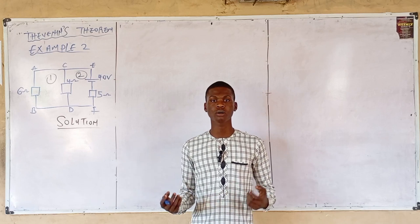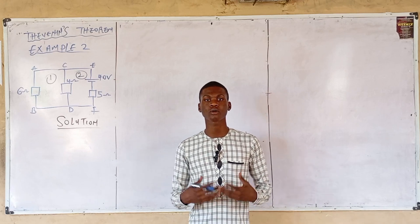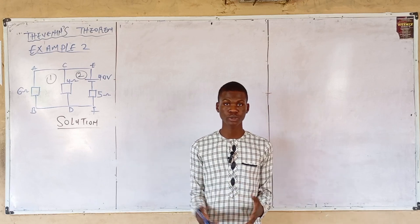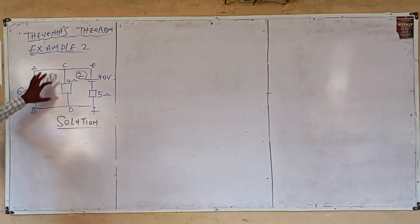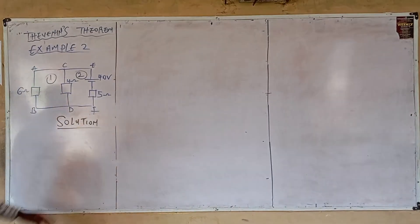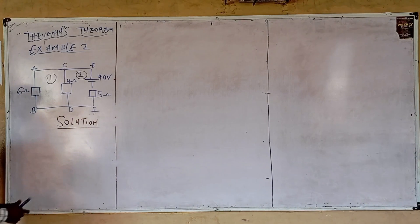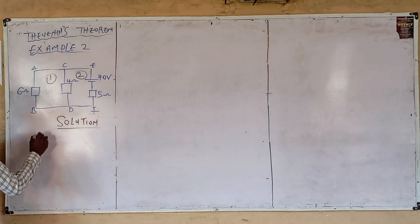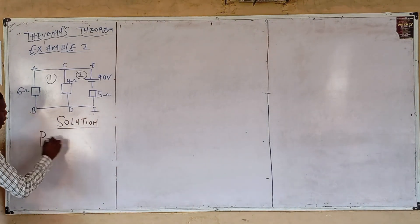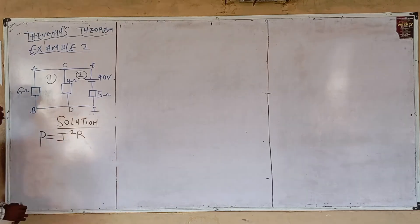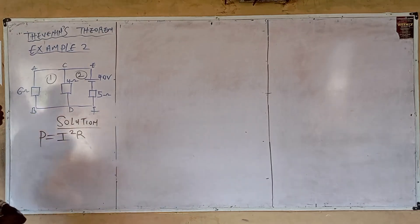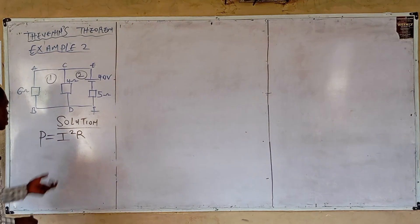Hello and welcome back — Question 2b. The question says to calculate the power in the 4-ohm resistor mathematically. Mathematically, power equals I squared R, meaning for the 4-ohm resistor I need to know the current in the 4-ohm resistor.